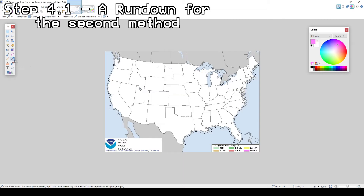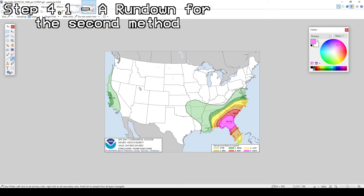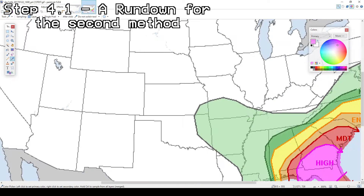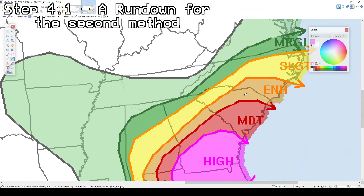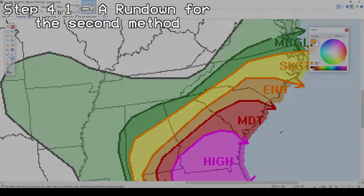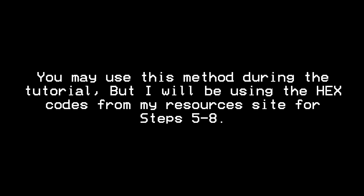Using this tool, you can click on the correct color you need for whichever step you are on for making your custom outlook. For example, if you are making the slight risk outline, you will use the tool to click on the outline of the slight risk on the real SPC outlook to grab the exact color to use for your slight risk outline. This works for all of the areas, water zones, and state borderlines. You may want to use this method once you get the hang of making these fictional outlooks.